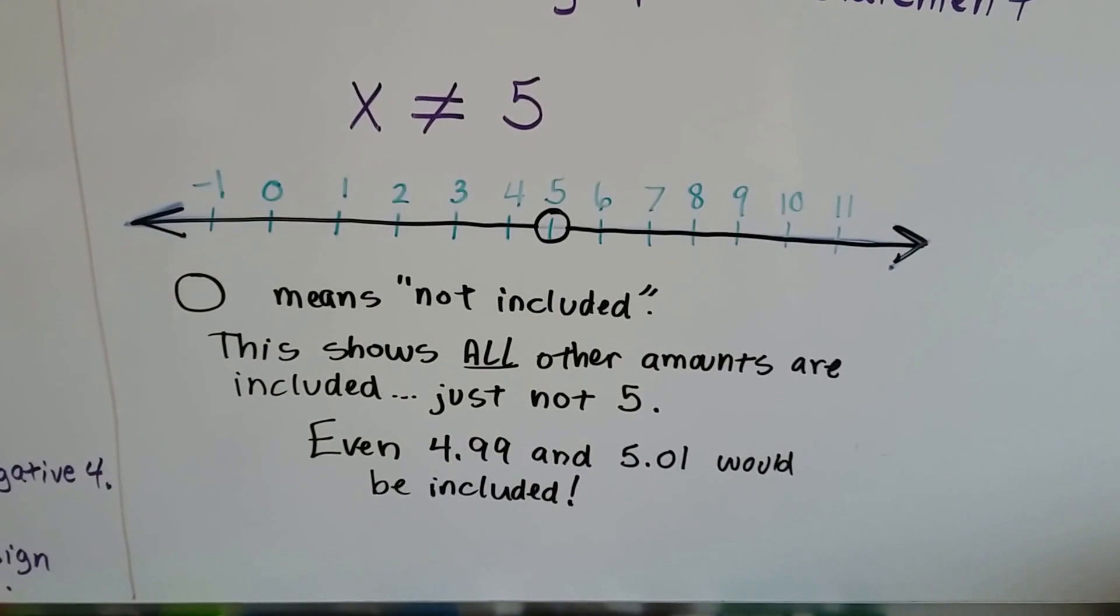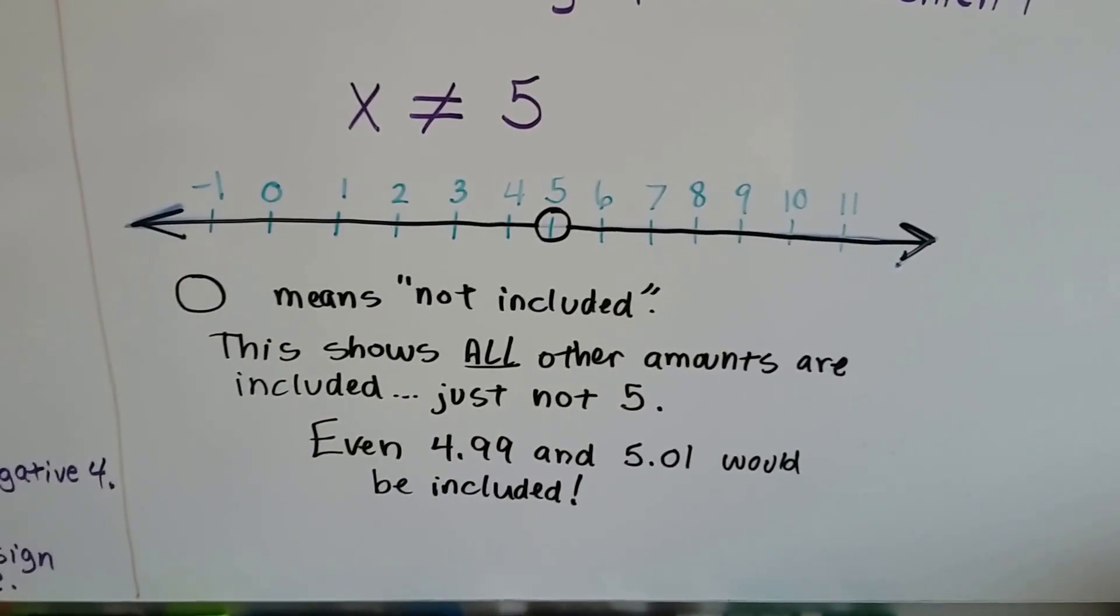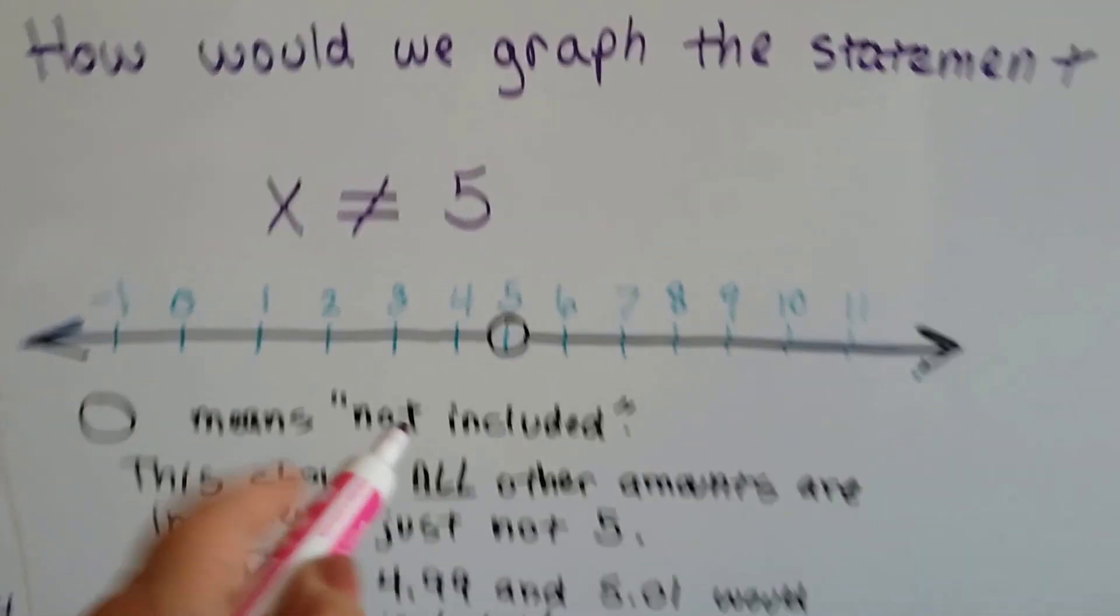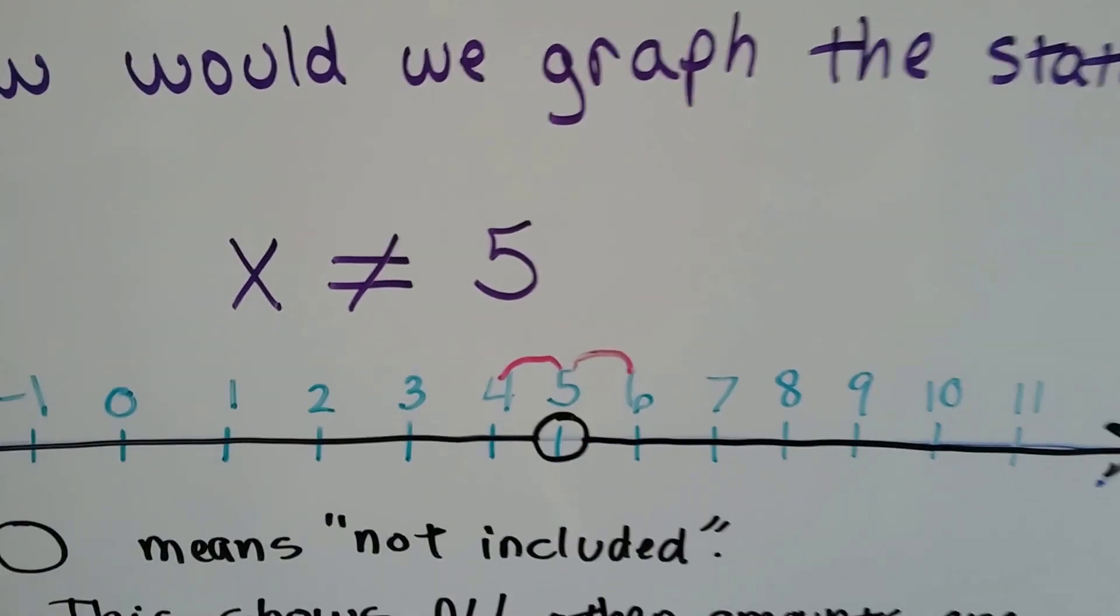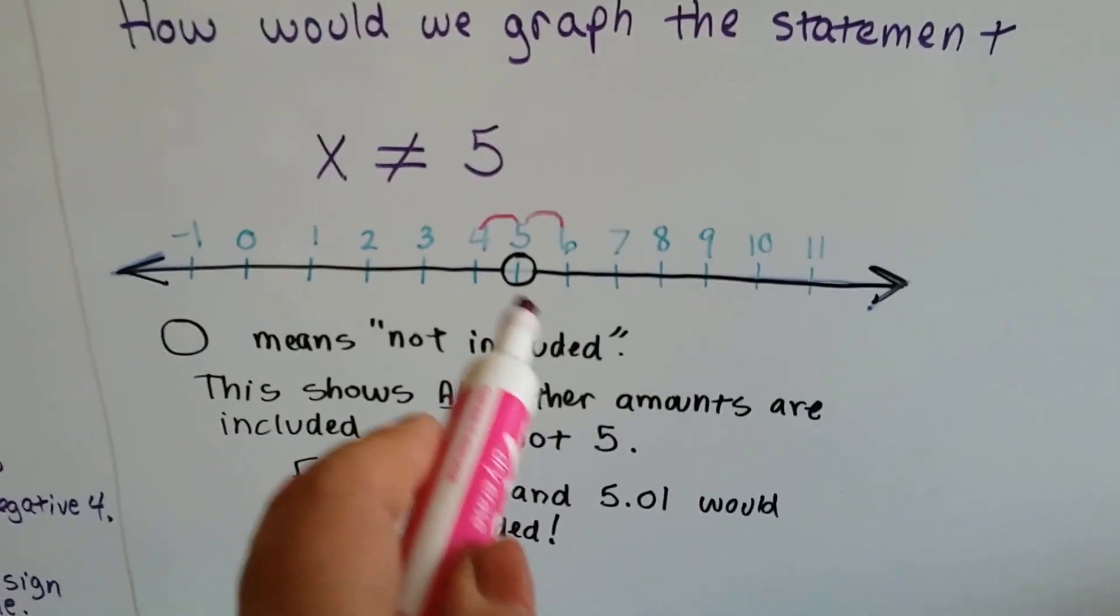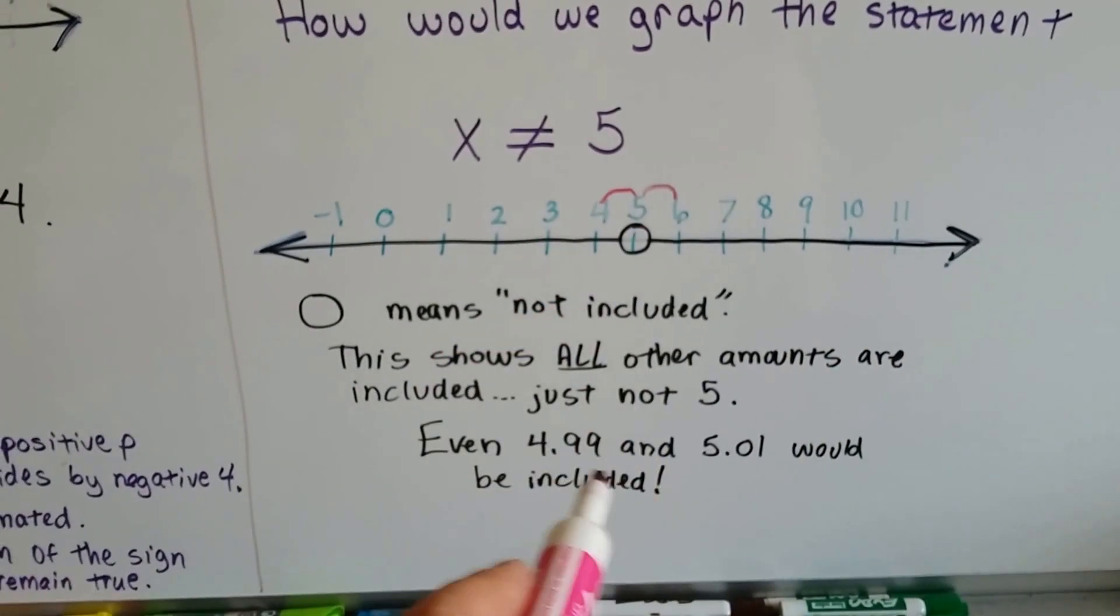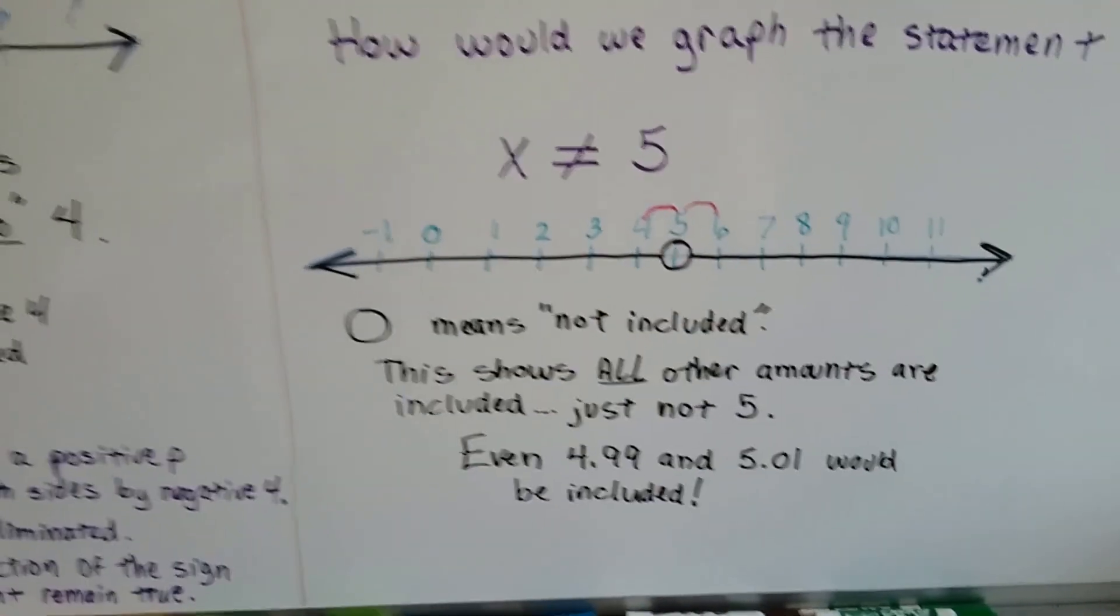So even 4.99 or 5.01 would be included. So that includes the numbers in between 4 and 5 and the numbers in between 5 and 6. As tiny of fractions or decimals that they can be, they would be included as long as it's not exactly 5, okay?